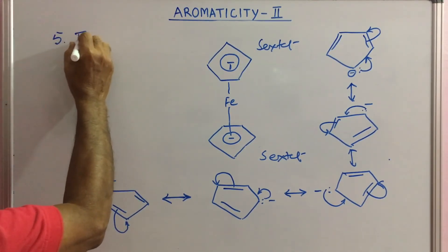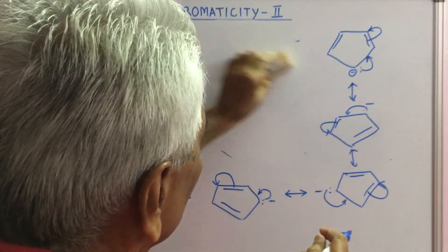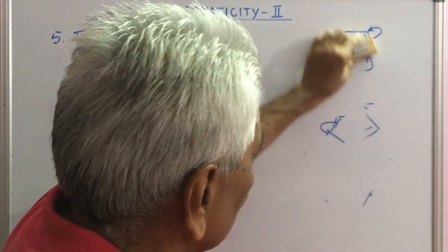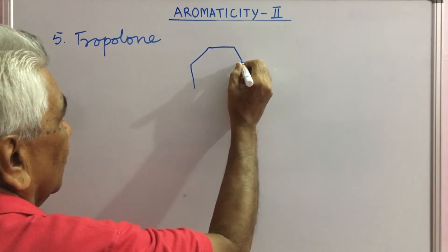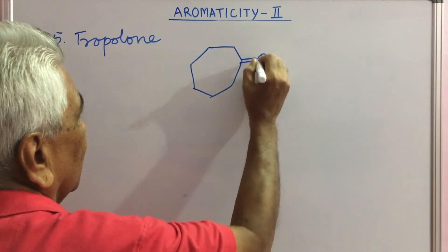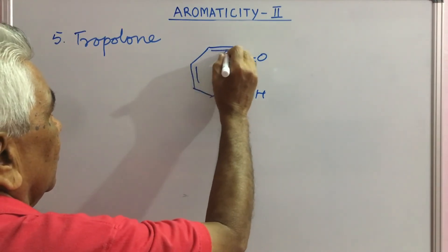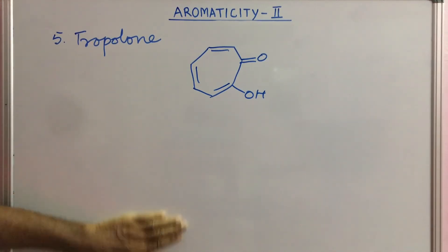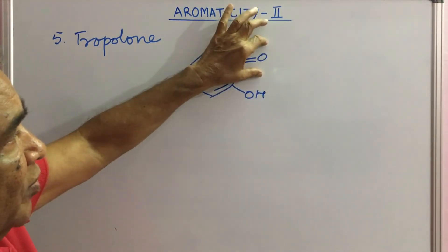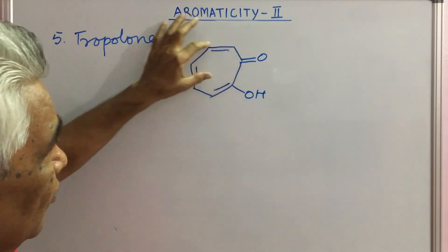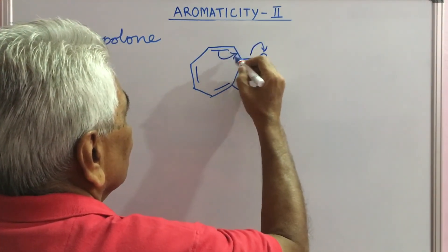The last example is tropolone. This molecule has seven pi electrons around the ring — one p orbital here, one p orbital here, double bonds formed, giving six — so seven are present in the ring. When you write resonance structures for this, you find that this type of delocalization takes place.